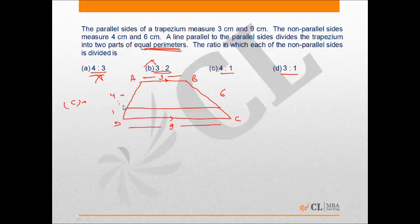Then let's assume this is E and F. AE will be 4/5 of 4 and BF will be 4/5 of 6. Similarly, this will be 1/5 of 4 and 1/5 of 6.